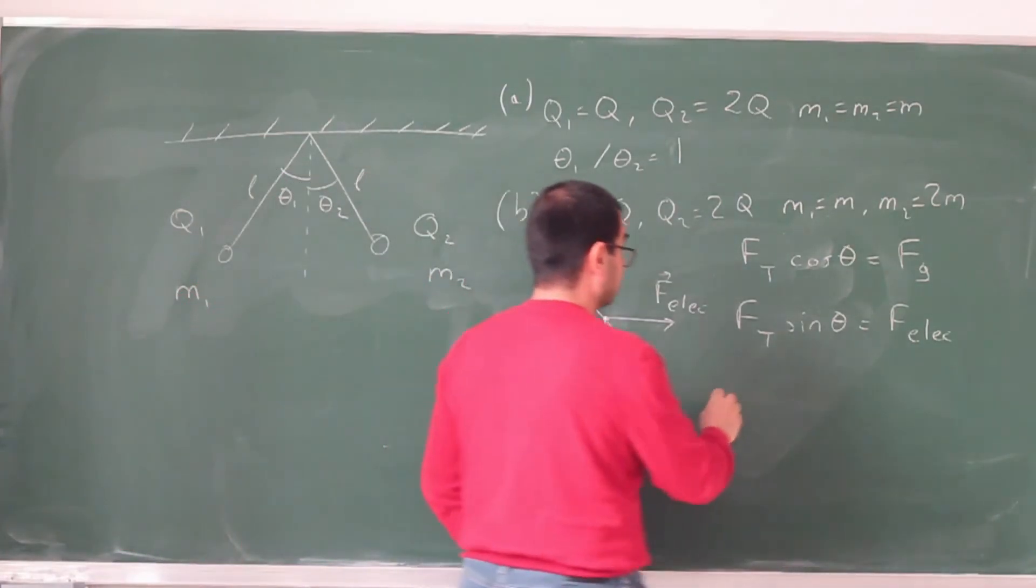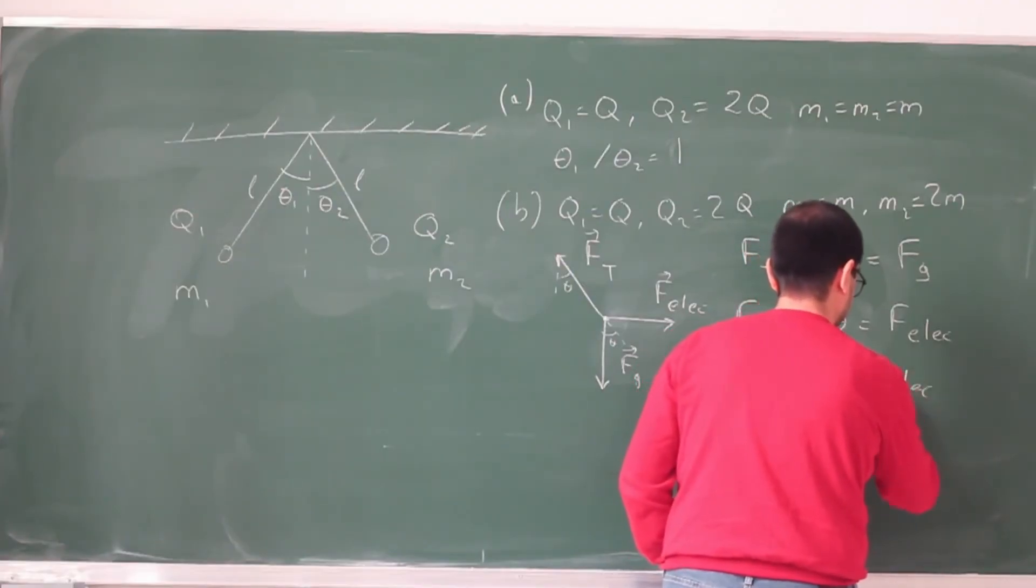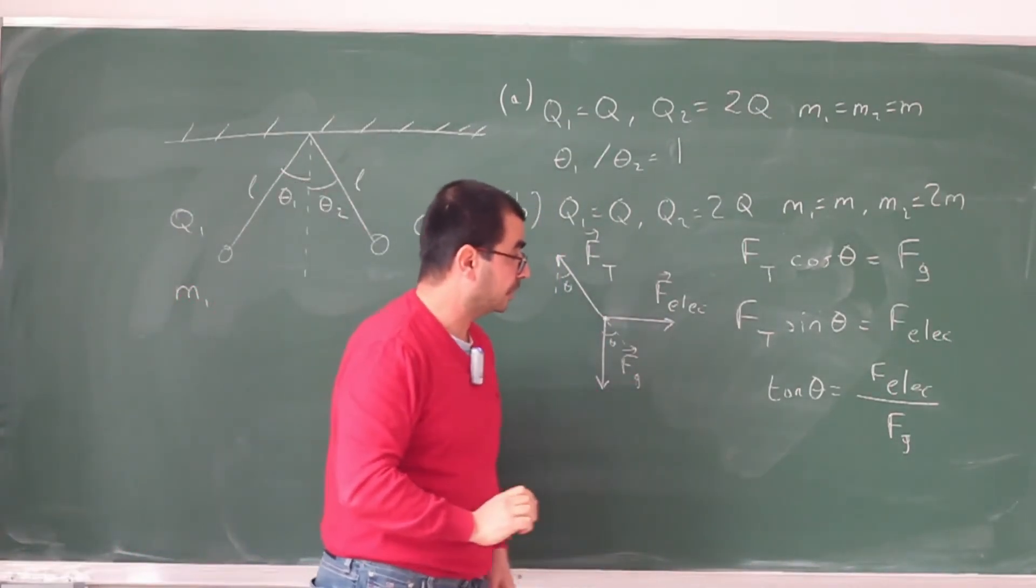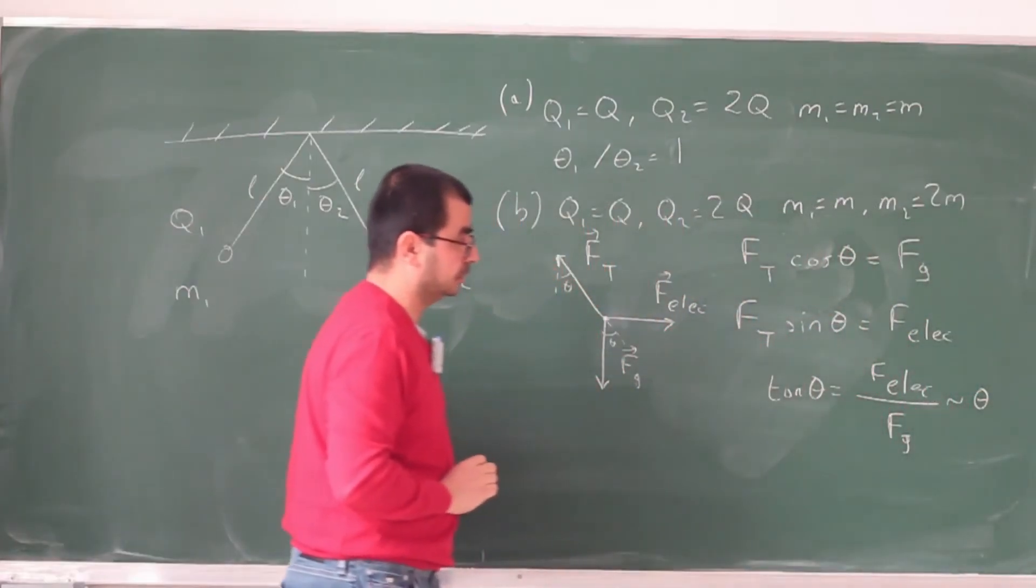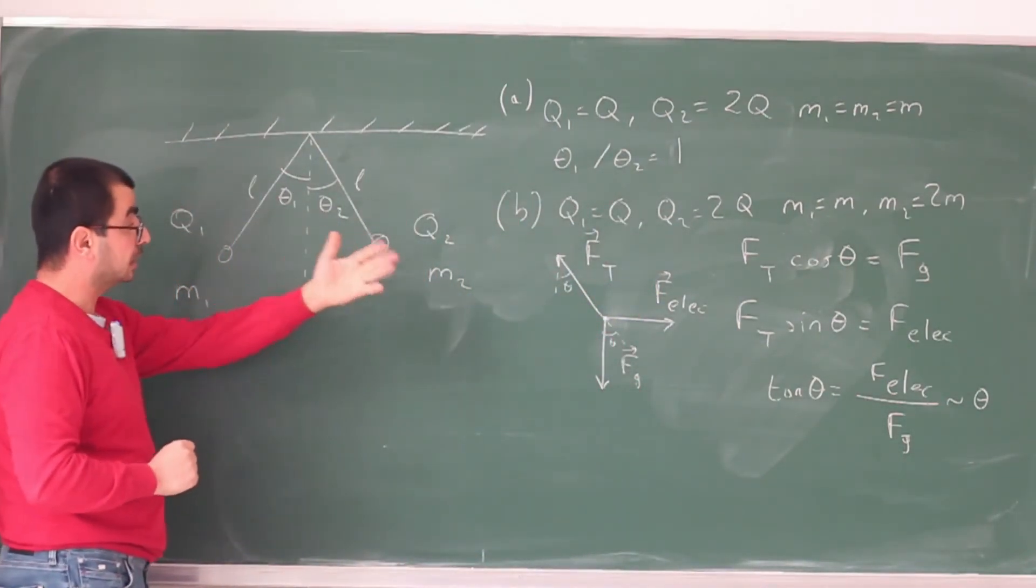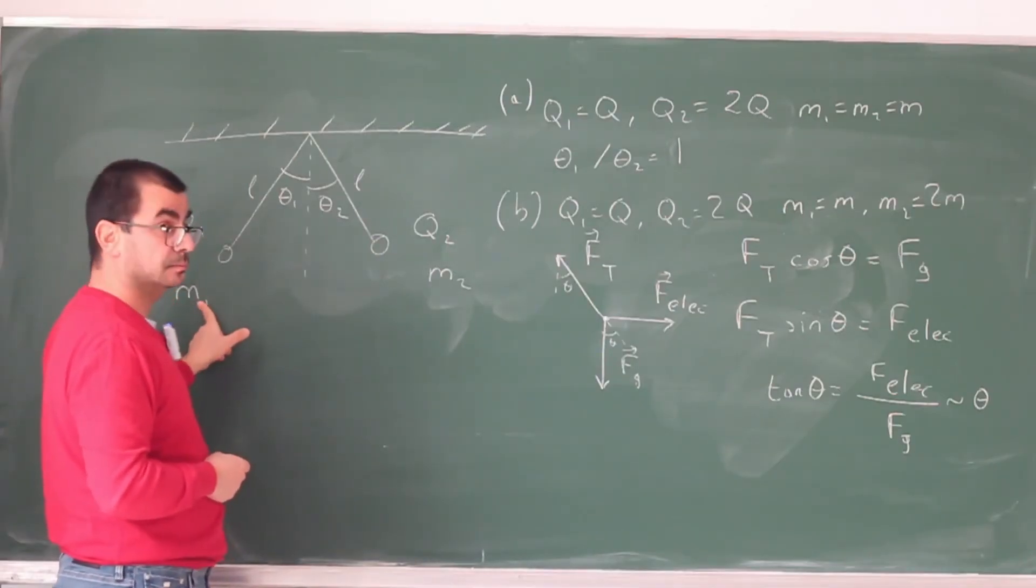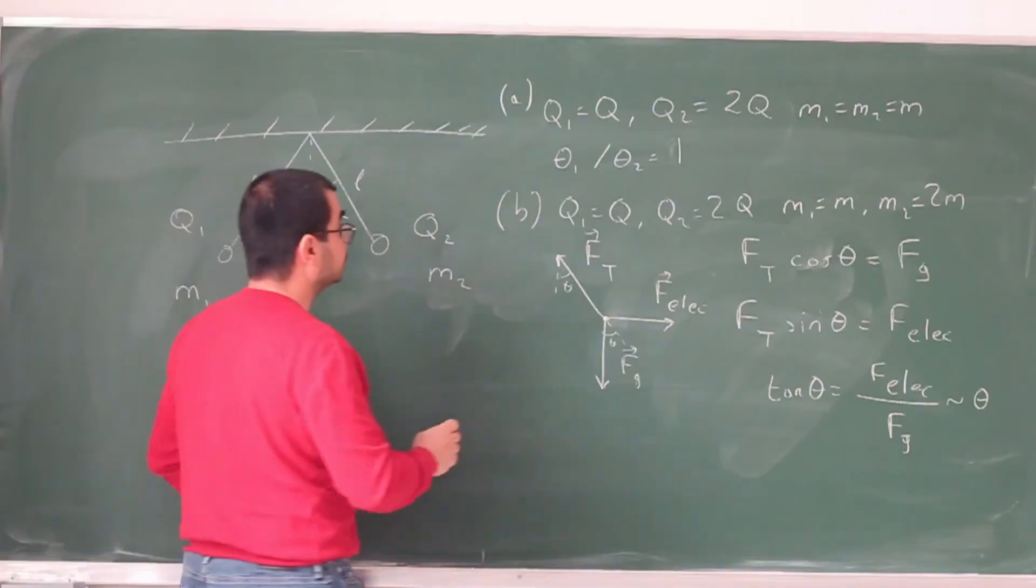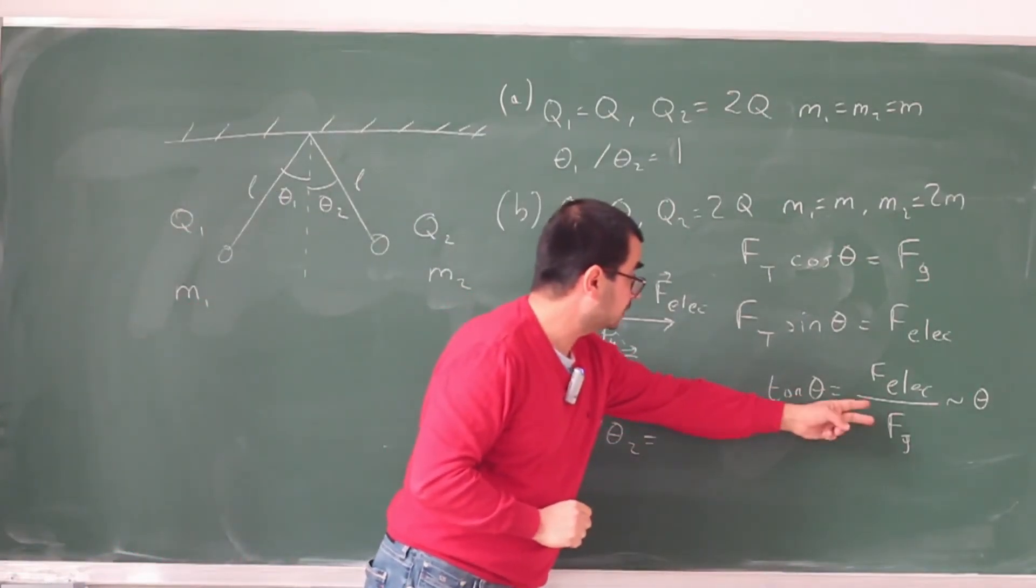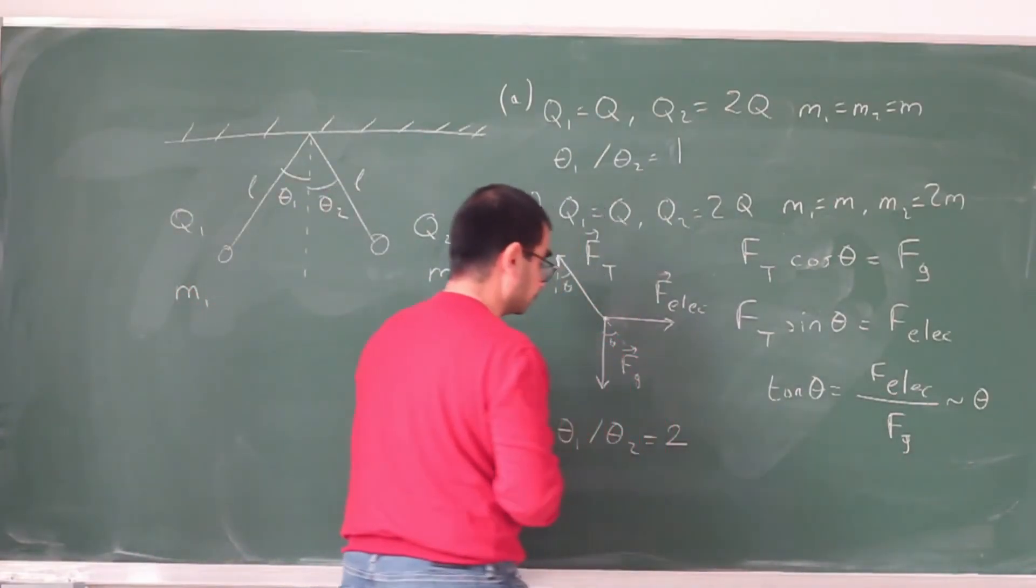Alright, now I can divide these side by side. Divide this one by that one. I'm going to get tangent theta is equal to F electrostatic divided by Fg. But because of the small angle approximation, this tangent theta is in fact approximately equal to theta. And now the electrostatic force is the same for both of these by action and reaction principle. Fg is twice as big for the second mass because it has twice the mass of this one. Okay, so the ratio theta1 over theta2 is going to be, the theta2 is going to have a larger denominator, so the number is going to be smaller. This is just going to be 2.